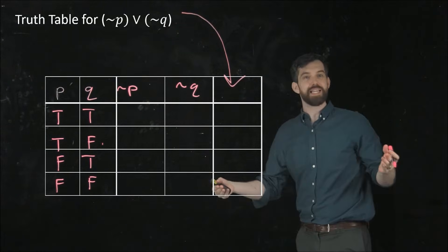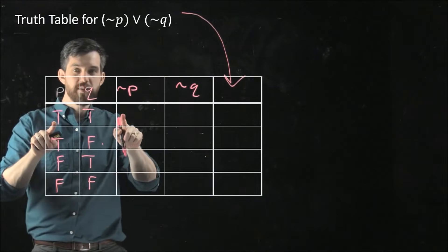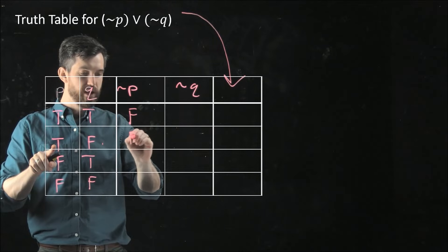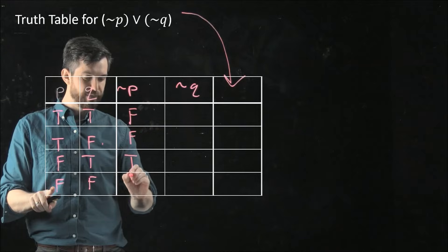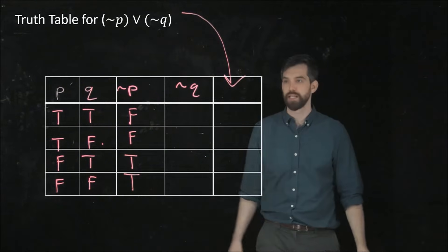So not P is just the opposite of whatever P is. If P is true, then not P is false. P is true, not P is false. P is false, not P is true. And P is false, not P is true. So I'm able to fill that in pretty easily.